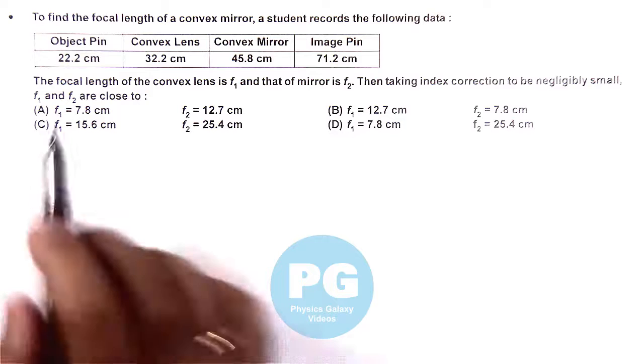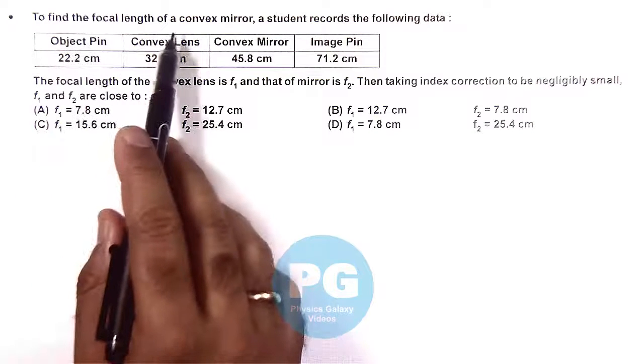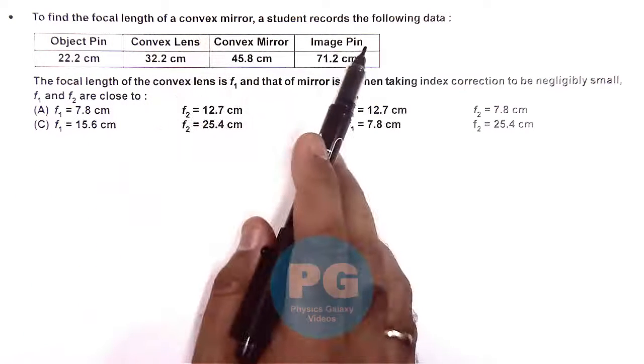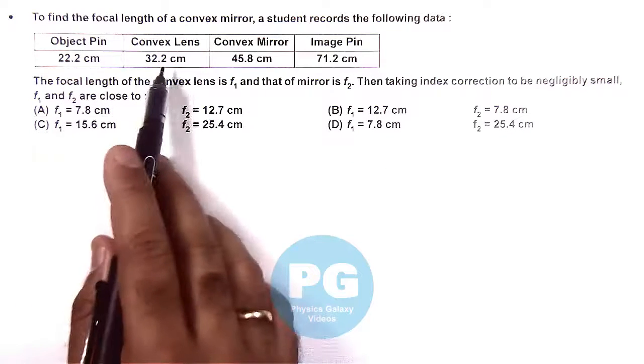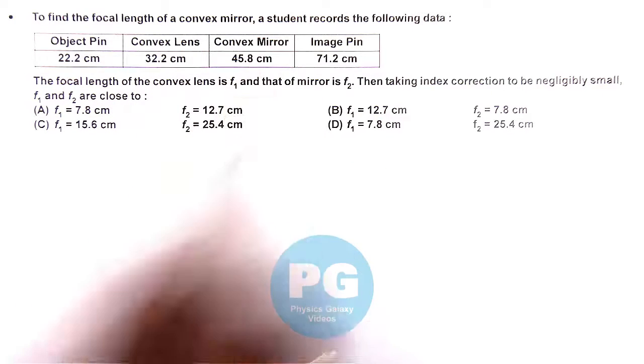In this question, it is saying to find the focal length of a convex mirror, a student records the following data: object pin, convex lens, convex mirror and image pin.